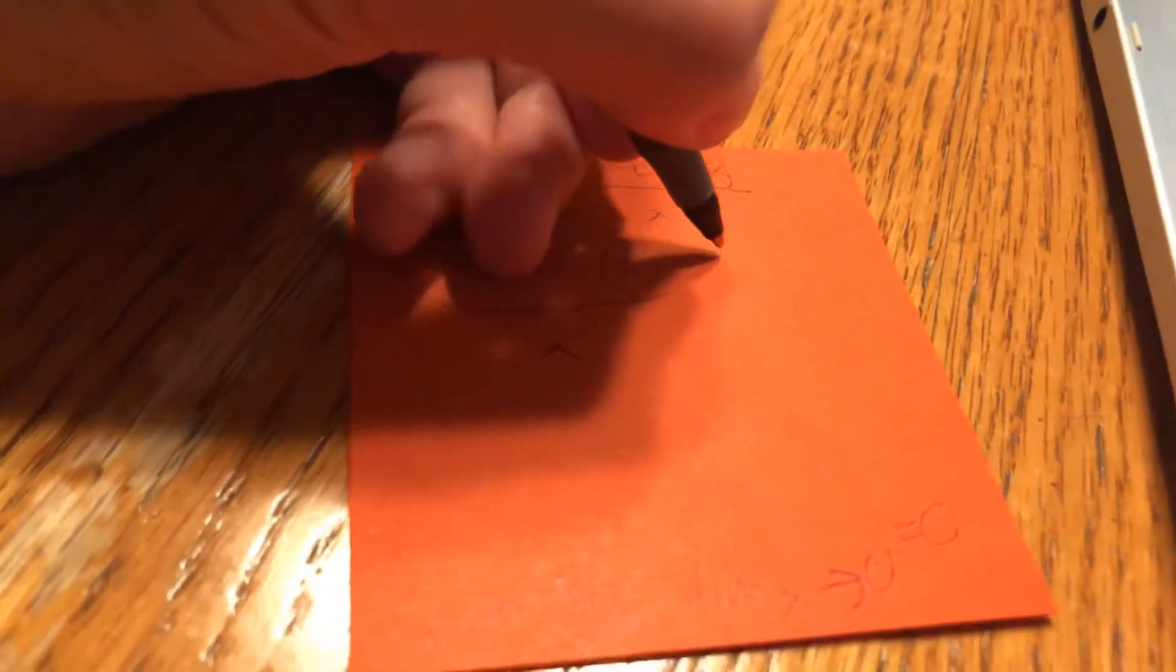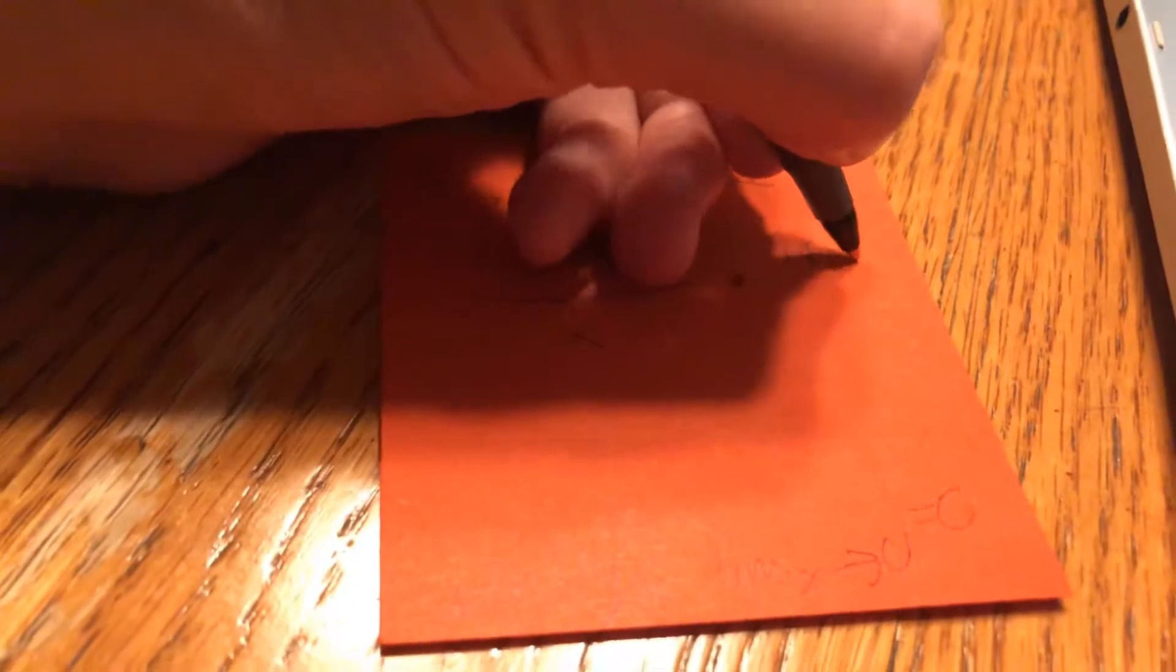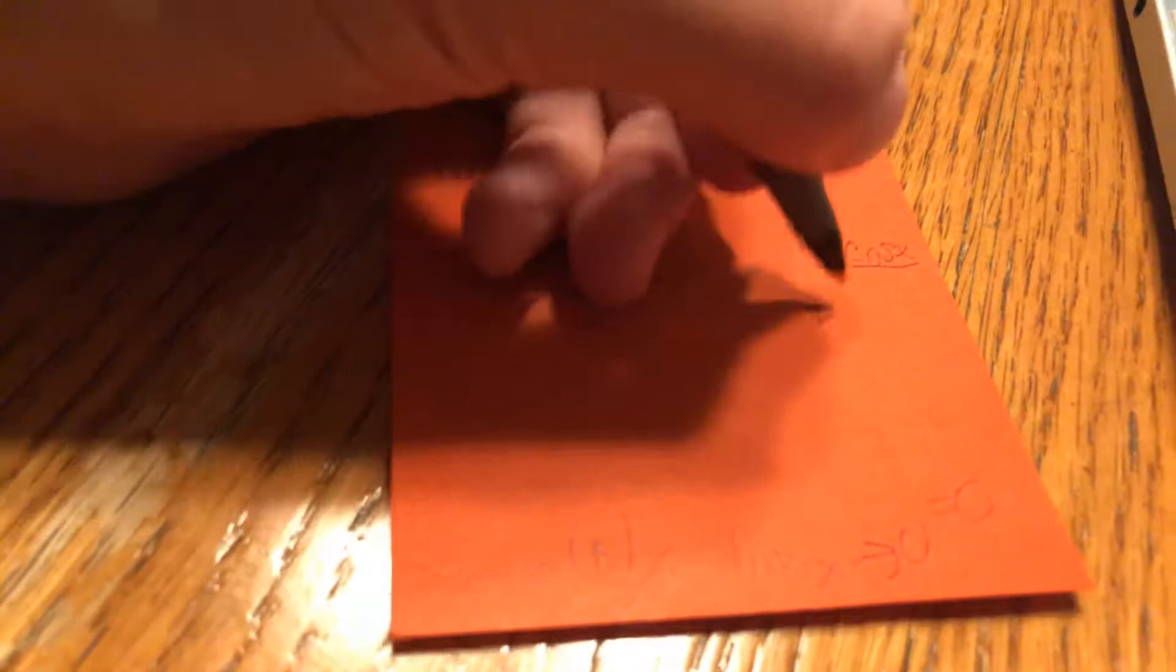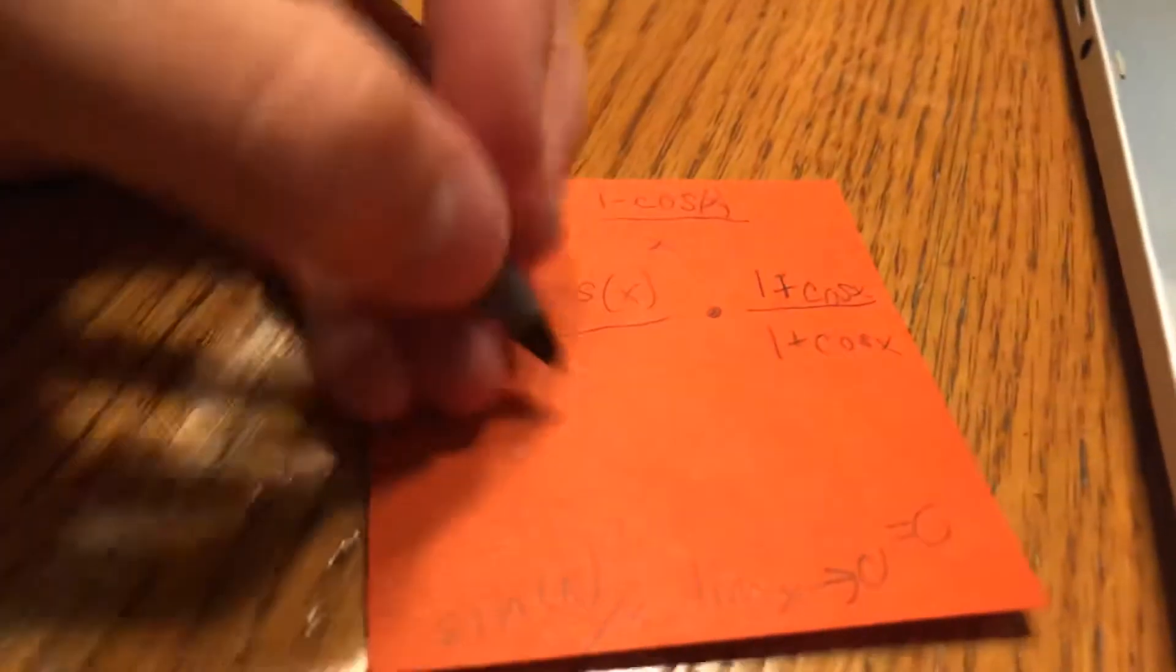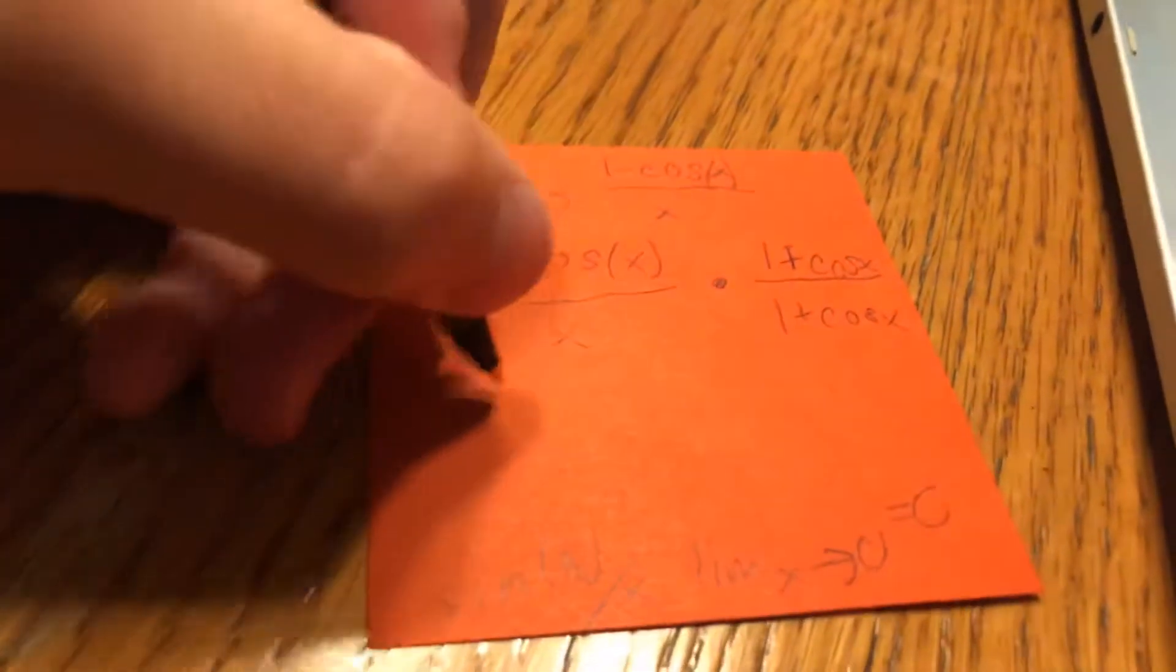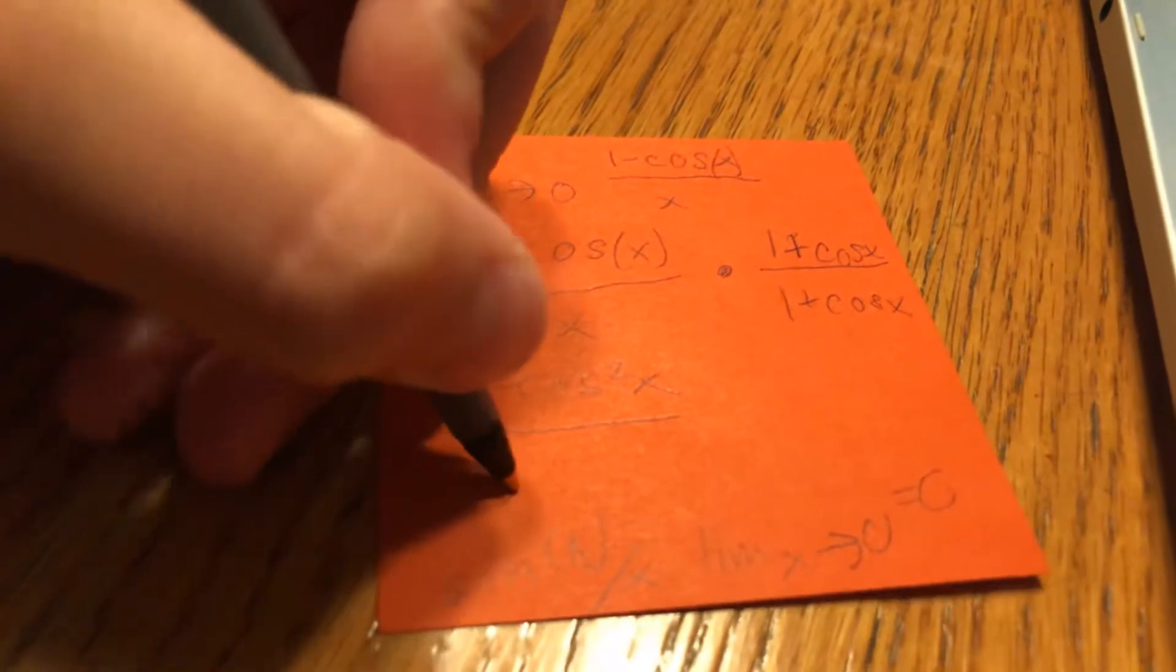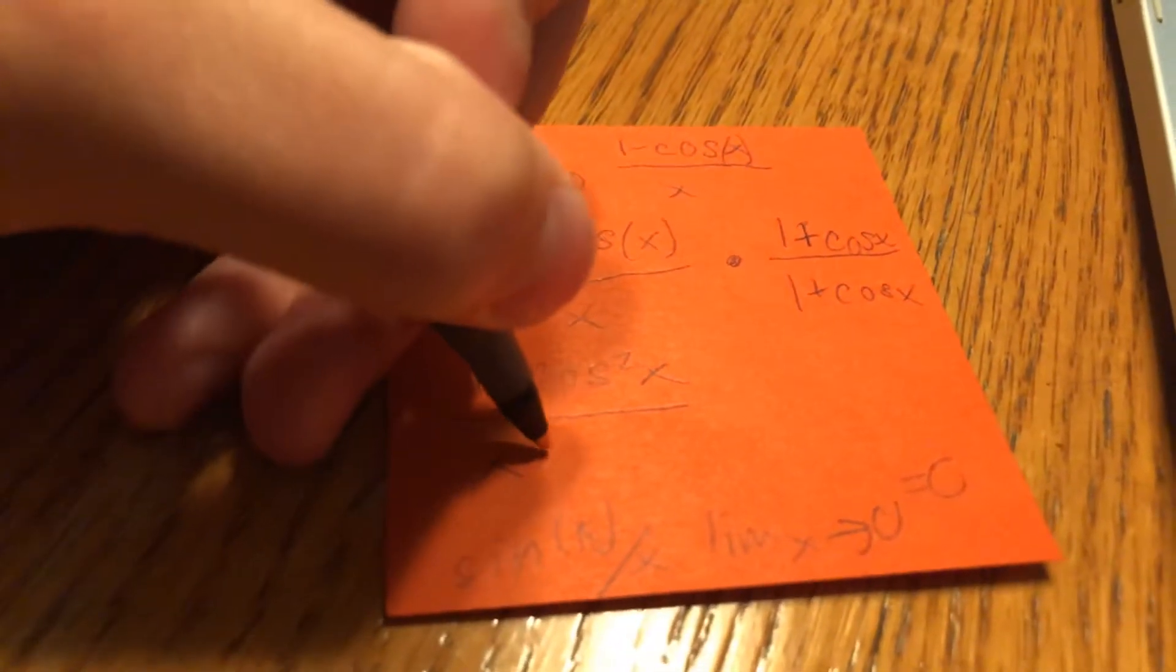And we just multiply it by 1. We multiply it by 1 written in this very epic fancy way, right? This will give us 1 squared. And then the minus cosine and the positive cosine will actually cancel out. So we'll just have 1 minus cosine squared of x, okay? And we have this divided by x times 1 plus cosine of x, okay?